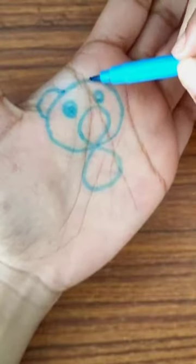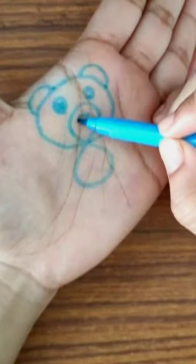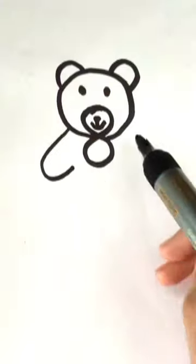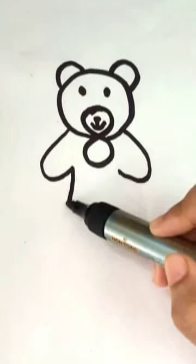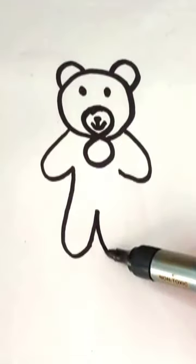Two semicircles. Eyes, nose, mouth. Can you write the letter C? Can you write the letter W? Congratulations on learning to draw a bear.